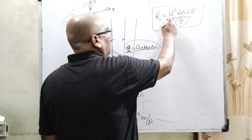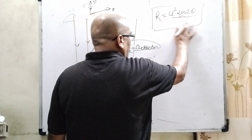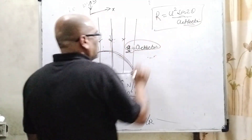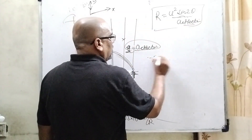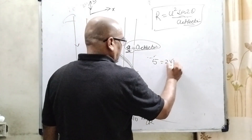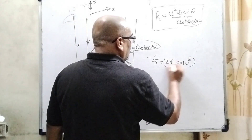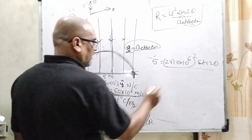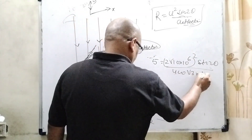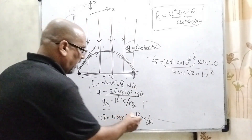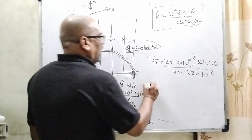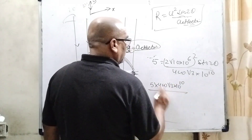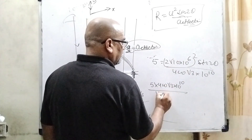The formula for range is R = u² sin2θ / g_eff. In place of g we put the effective acceleration. Range is given as 5 m, u = 2√10 × 10⁶, so: 5 = (2√10 × 10⁶)² × sin2θ / (400√3 × 10¹⁰). The numerator becomes 4 × 10 × 10¹² = 40 × 10¹².